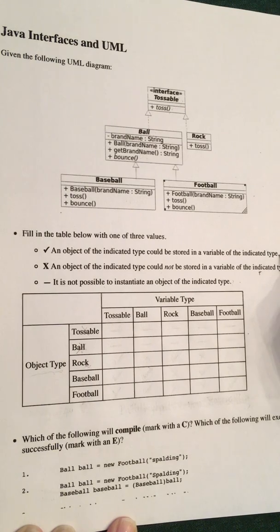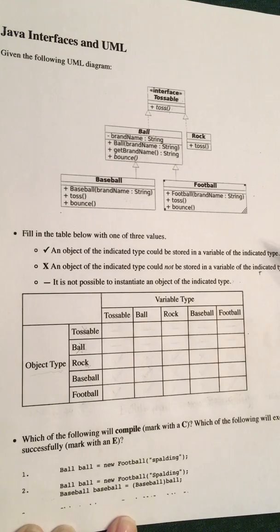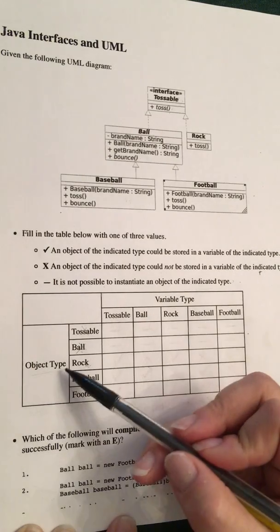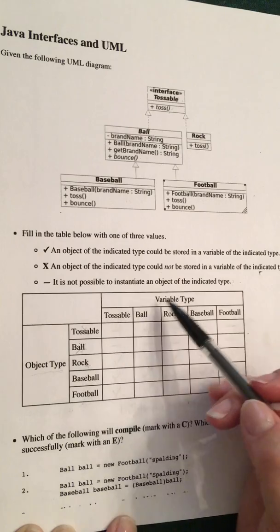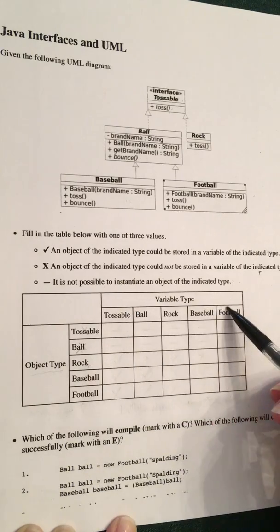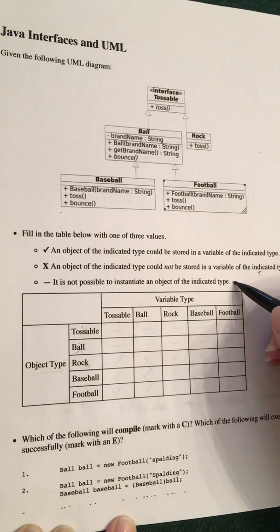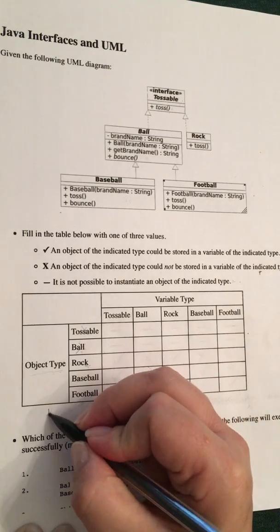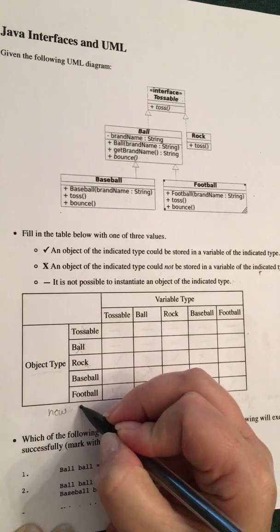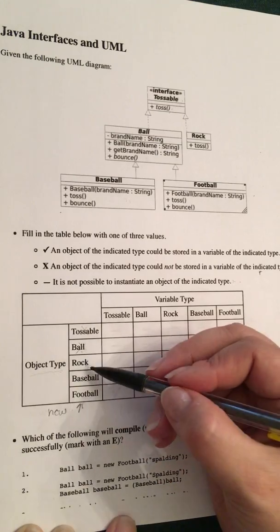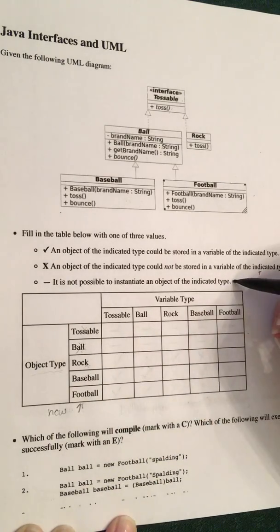So let's look at this table we want you to fill out. We want you to put a check if an object of the indicated type could be stored in a variable of the indicated type — specifically, a check if an object of this type can be stored in a variable of one of these types, and an X if it cannot. Then if you can't instantiate an object of the indicated type — i.e., if you can't say 'new tossable', 'new ball', 'new rock', etc. — then we want you to put a dash.